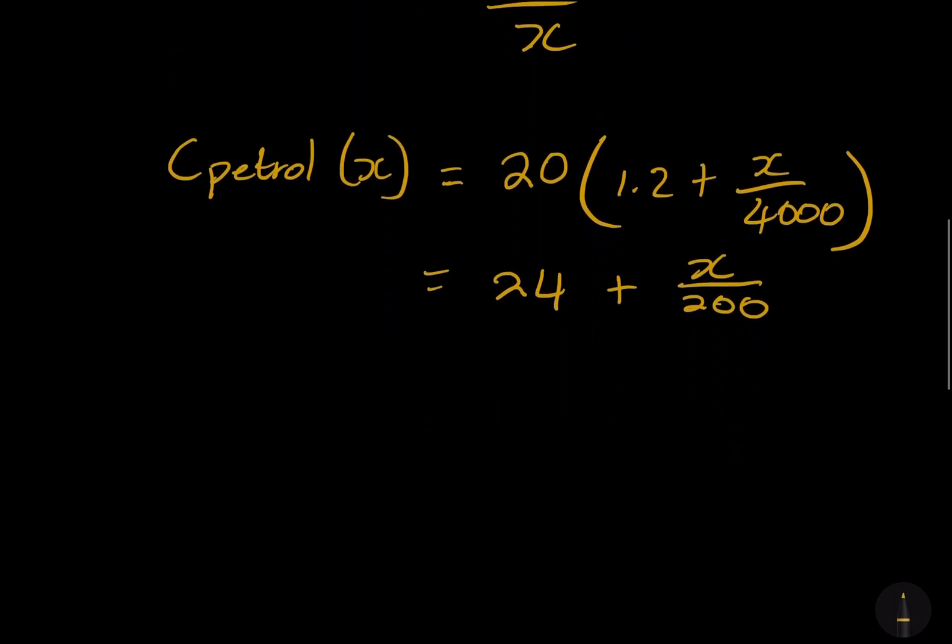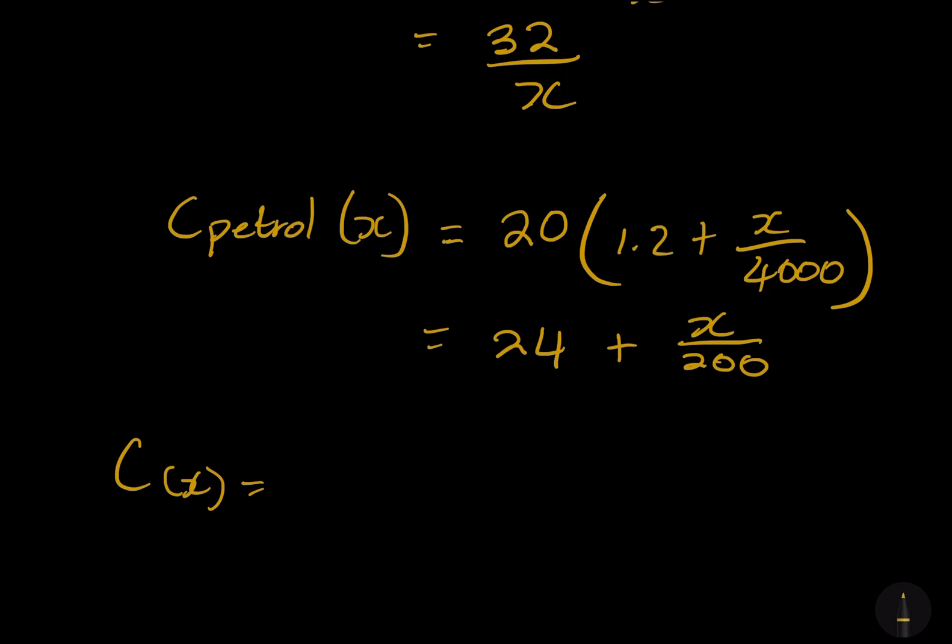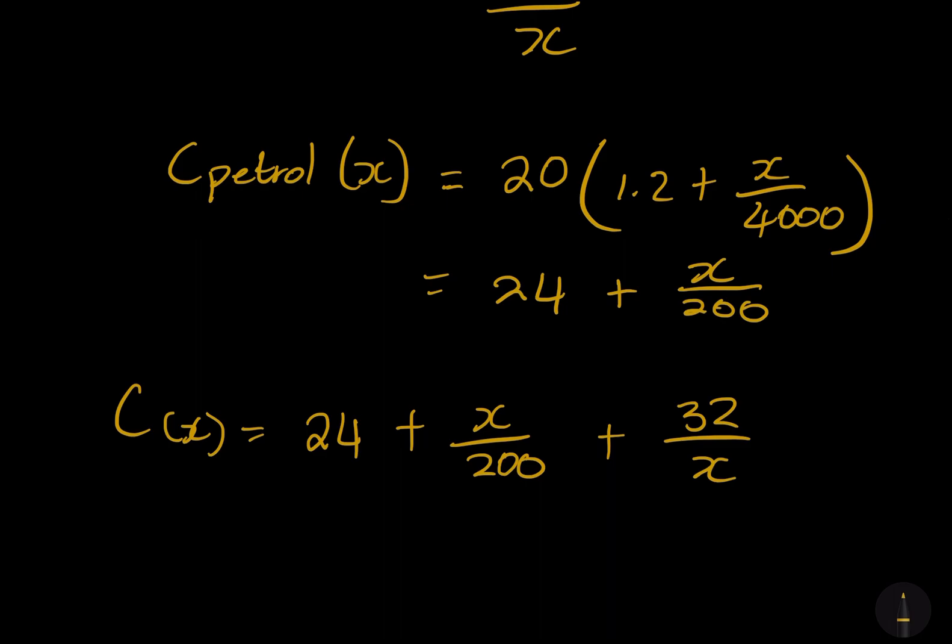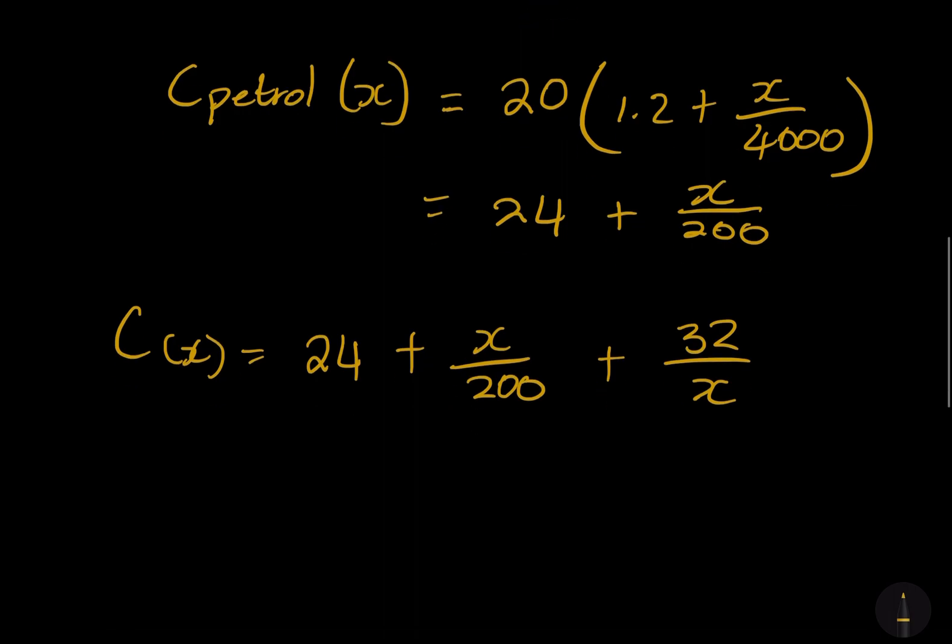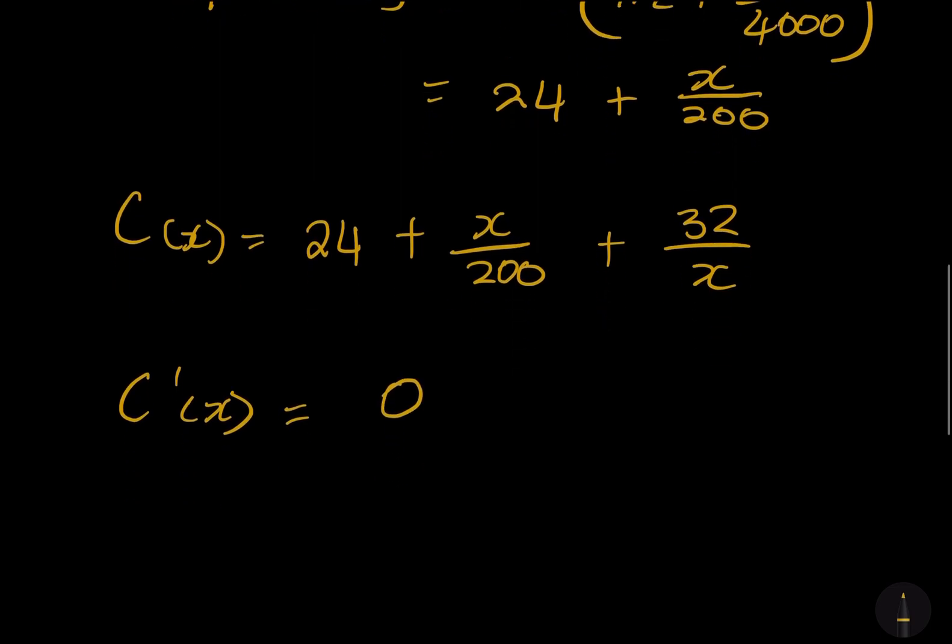In this case, I've got two costs - cost of petrol, cost of water. So the total cost would be the two together. I would have 24 plus x/200 plus 32/x. Now remember, that is what we are trying to minimize. How do we minimize? Please remember, we always take the derivative and make it equal to zero. We're going to take the derivative of that and make it equal to zero.